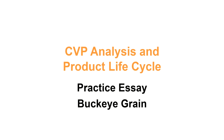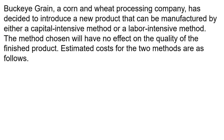The topics of this essay are CVP analysis and product life cycle. These topics make it a part two, section C question. The company is Buckeye Grain, a corn and wheat processing company that has decided to introduce a new product that can be manufactured by either a capital intensive method or a labor intensive method. The method chosen will have no effect on the quality of the finished product.